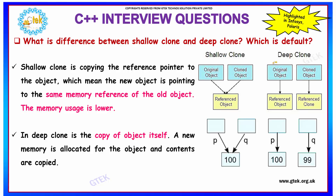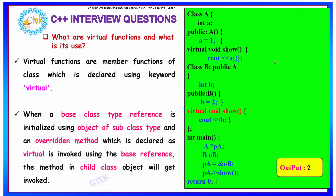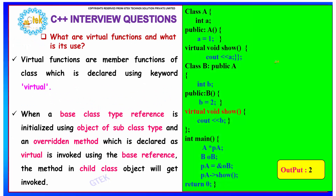These patterns of questions are asked in Infosys and Polaris. What are virtual functions and what is their use? Virtual functions are member functions of a class declared using the keyword 'virtual'. When a base class type reference is initialized using an object of a subclass type — for example, base class A and subclass B which is inherited as public of A — a reference object is created for A and assigned the subclass object.